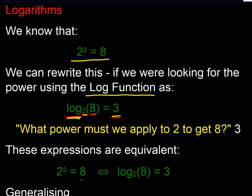We've actually got two connected relationships here: 2 to the power 3 equals 8, and we can rewrite that as log to the base 2 of 8 is 3. We've just repositioned everything, but effectively we're saying the same thing — 2 to the power 3 is 8, and the power we must raise 2 to in order to get 8 is 3.